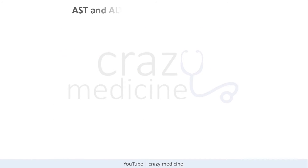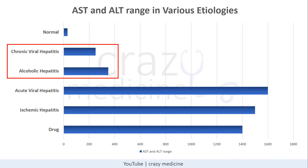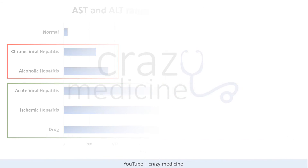This is the range of AST and ALT in various etiologies discussed so far. The normal range is around 10 to 40. In chronic viral hepatitis and chronic alcoholic hepatitis, values do not cross 300 to 400, remaining around 200 to 300 chronically. In acute viral hepatitis, ischemic hepatitis, and acute drug-induced hepatitis, values cross more than 1000.